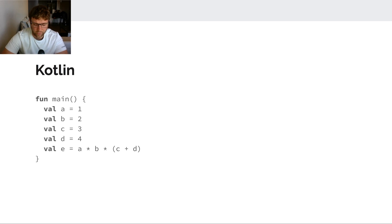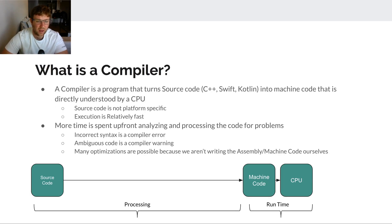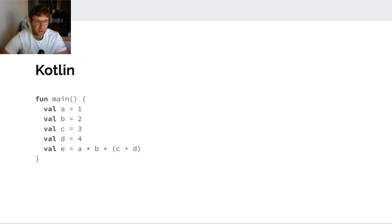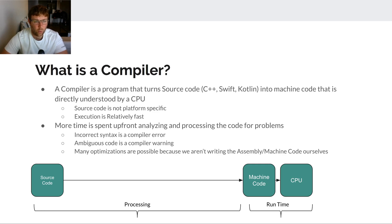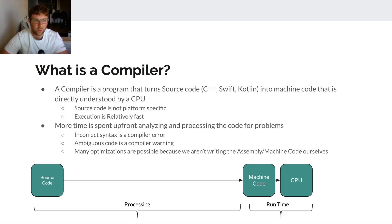Kotlin is a little bit different. Here's my Kotlin example of that same program from the earlier video. Kotlin, C++, and similar languages are compiled languages. A compiler is a program that turns our source code — our C++, Swift, or Kotlin code — into machine code that is directly understood by the CPU.